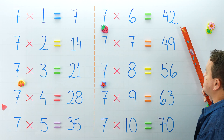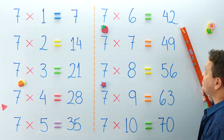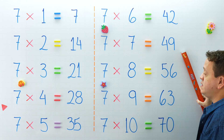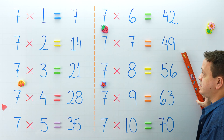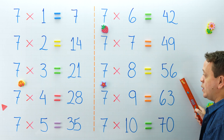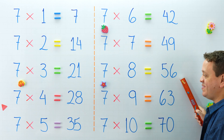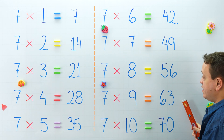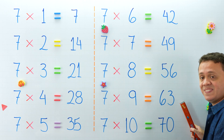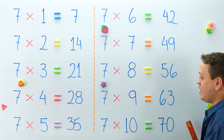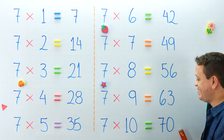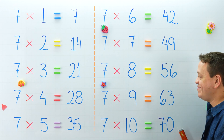7 times 6 is equal to? What is 7 times 7? 7 times 8 is equal to? 7 times 9 equals? One more, 7 times 10 is equal to 70. You got it!